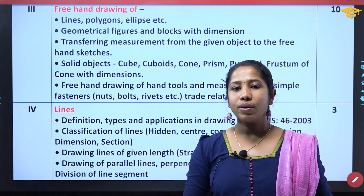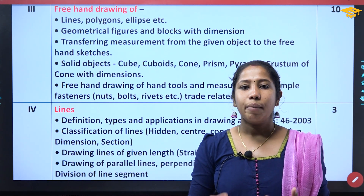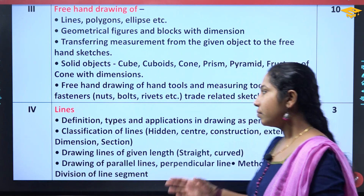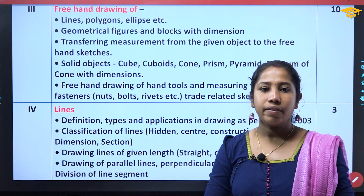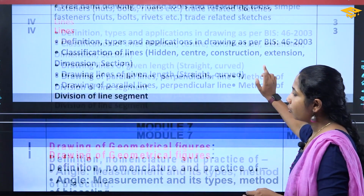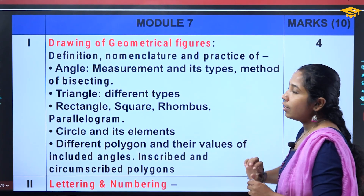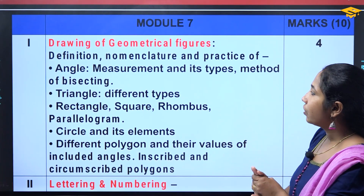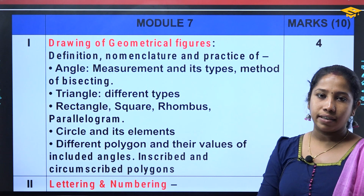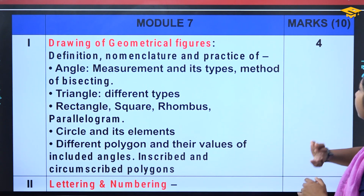Let's read a little from the syllabus section regarding weightage. We divide Module 7 — it is drawing of geometrical figures. The weightage is 4 marks.